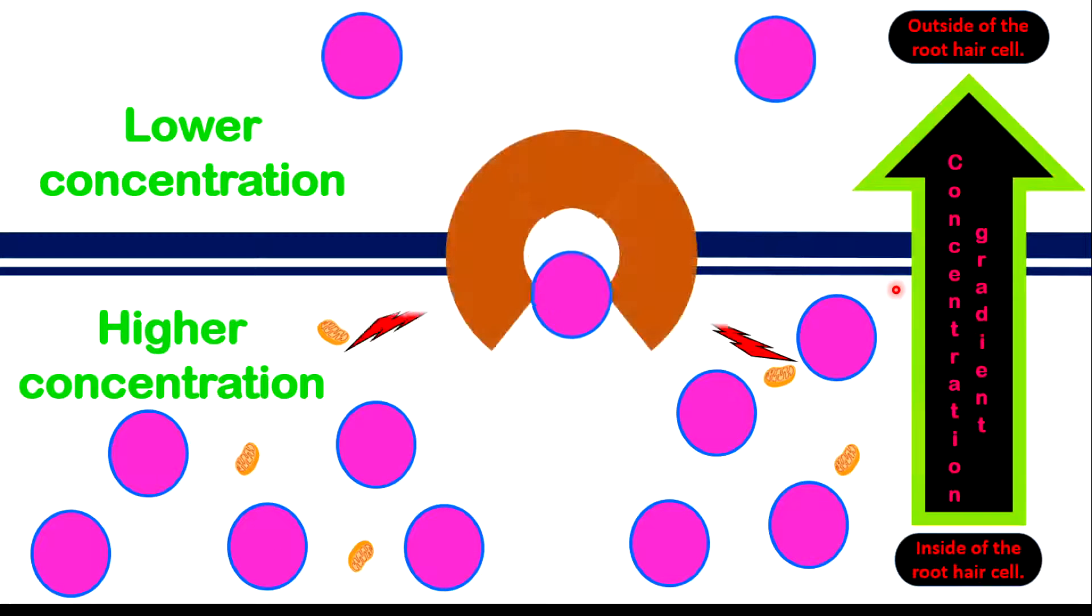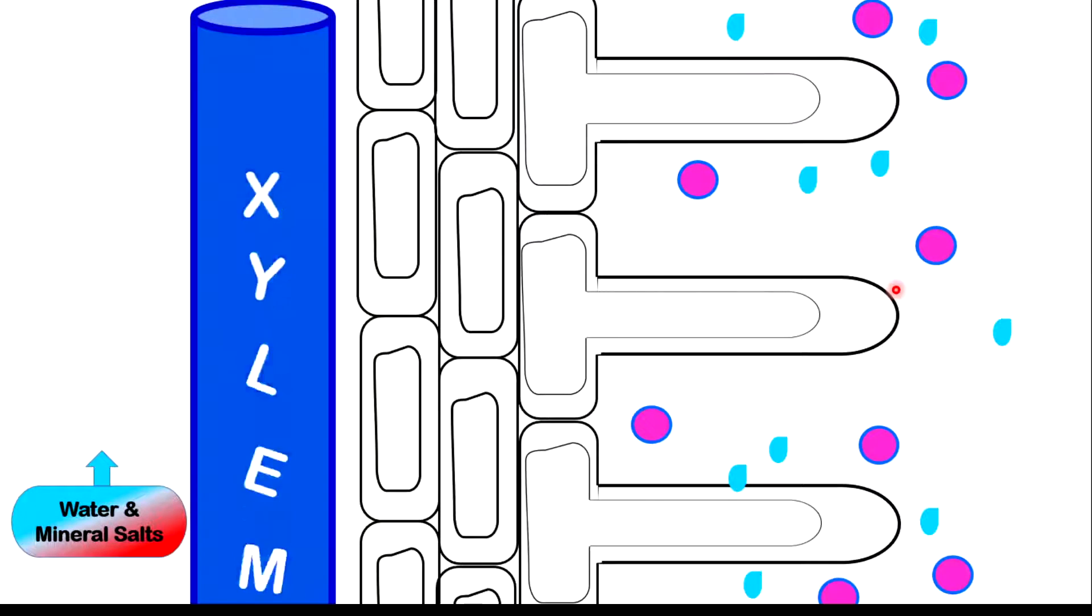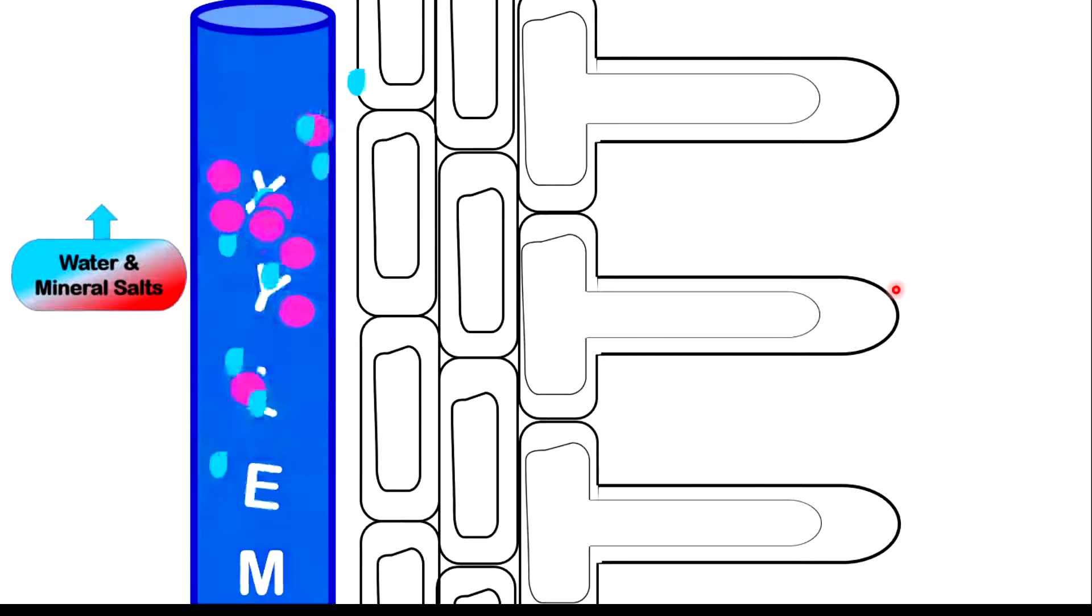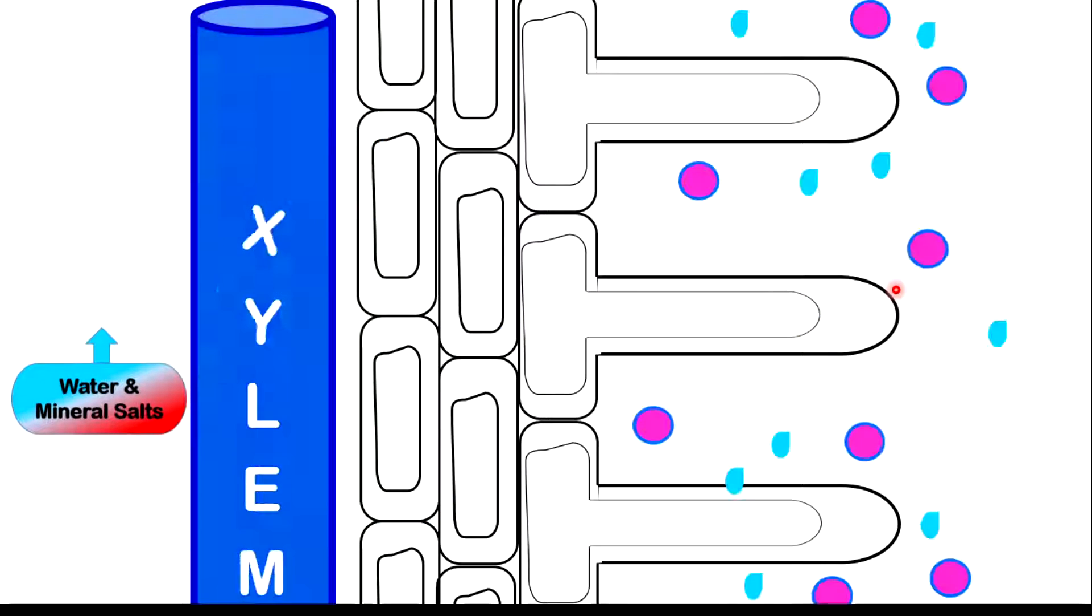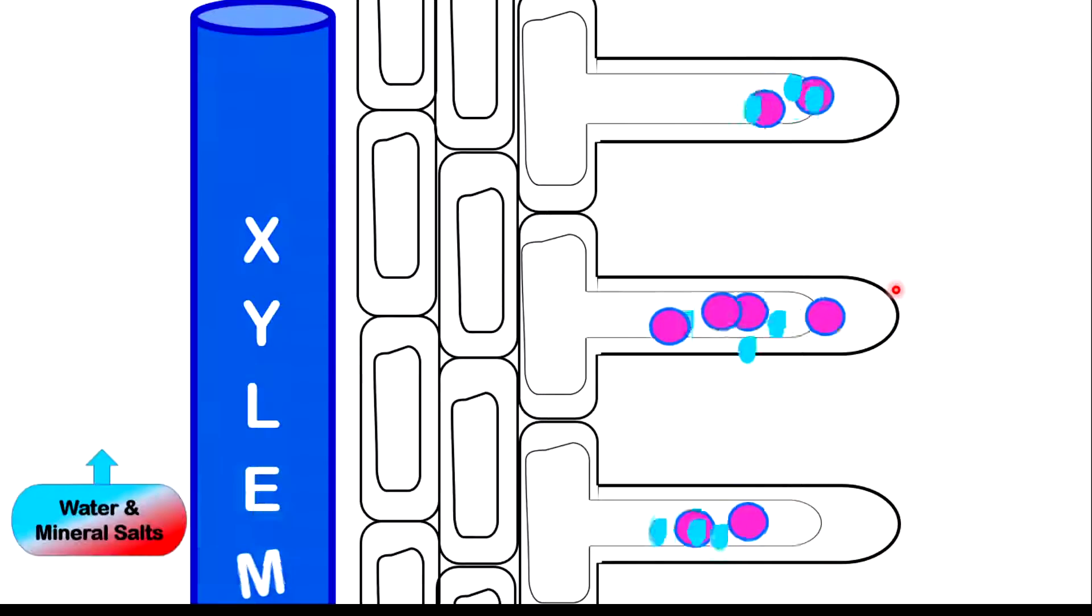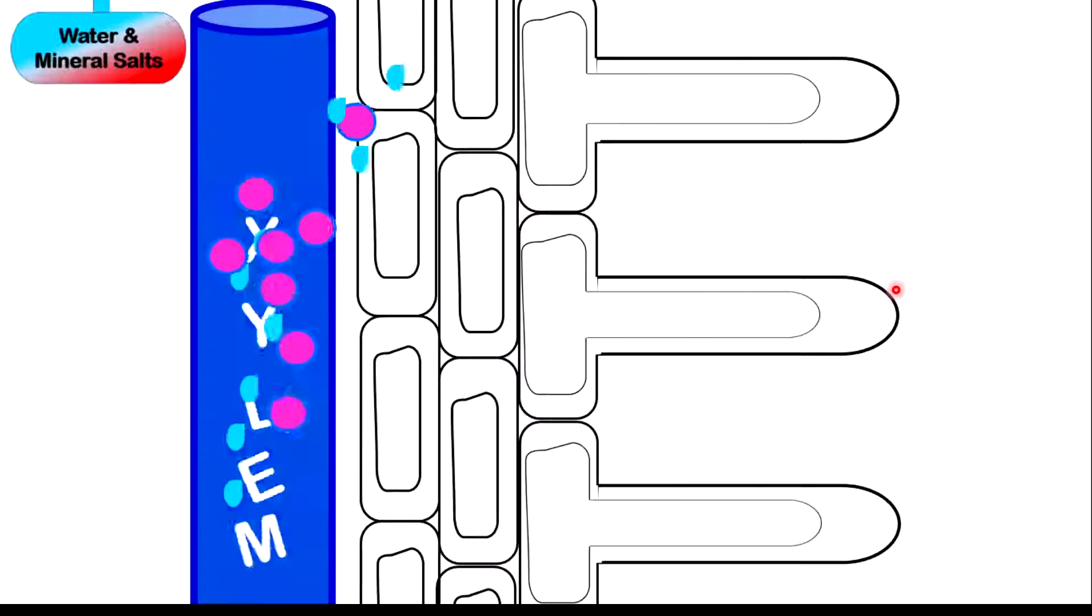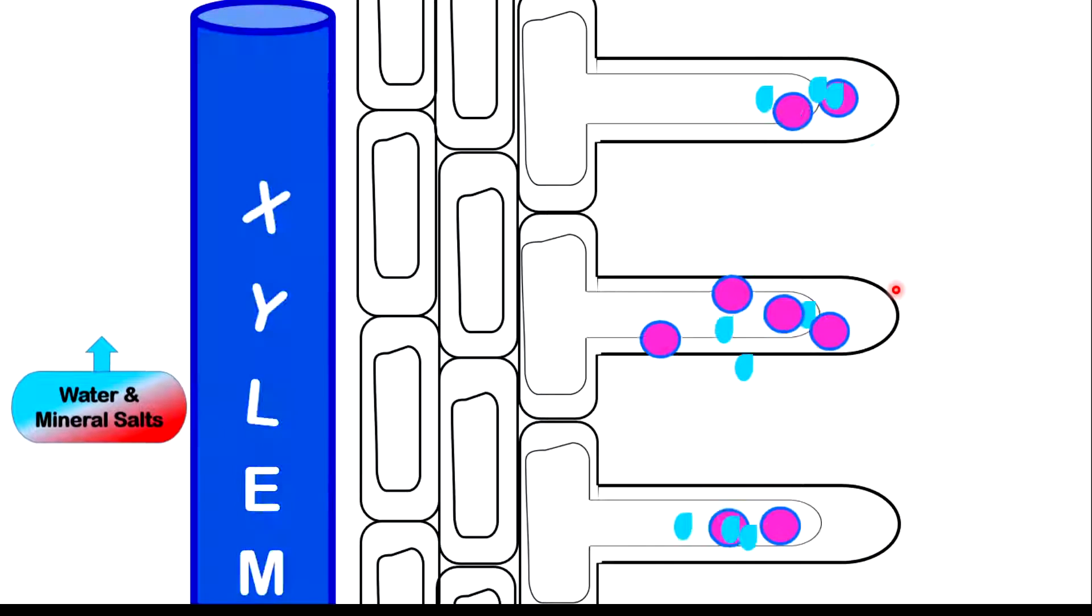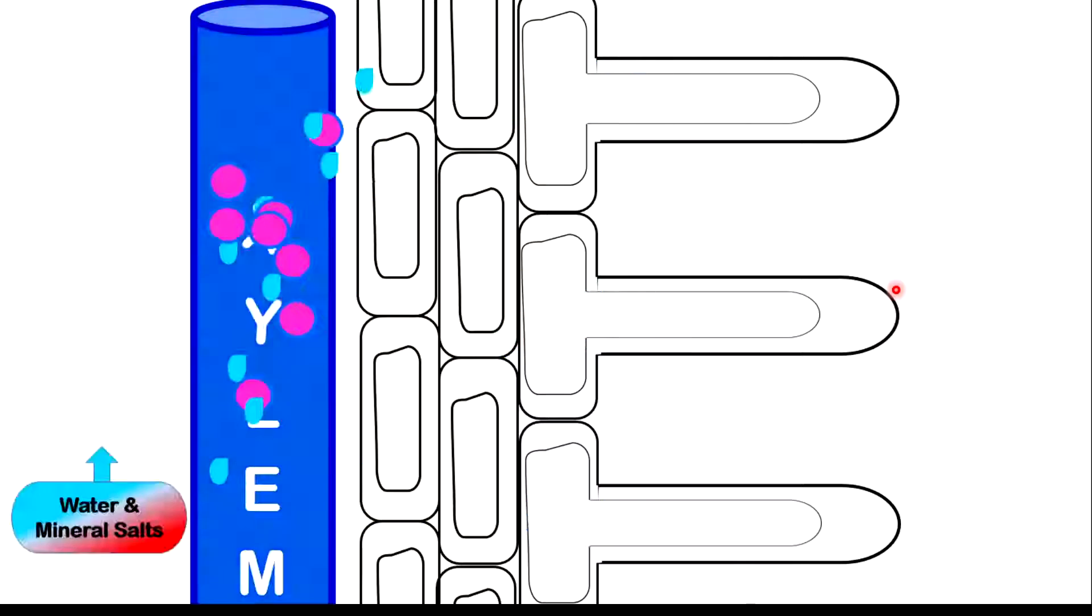Let us look further at what is happening to these particles as they move inside the root hair cells. The water molecules and the minerals rush in from the root hair cells across the epidermal cells and then into the xylem vessel. Point to note that substances only move upwards in the xylem vessel. In other words, they only move in one direction.